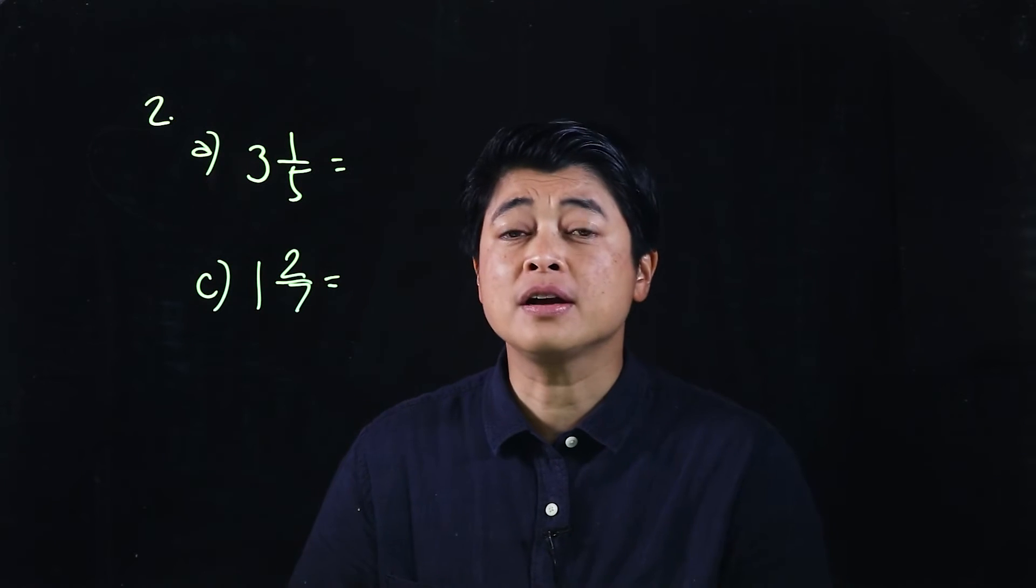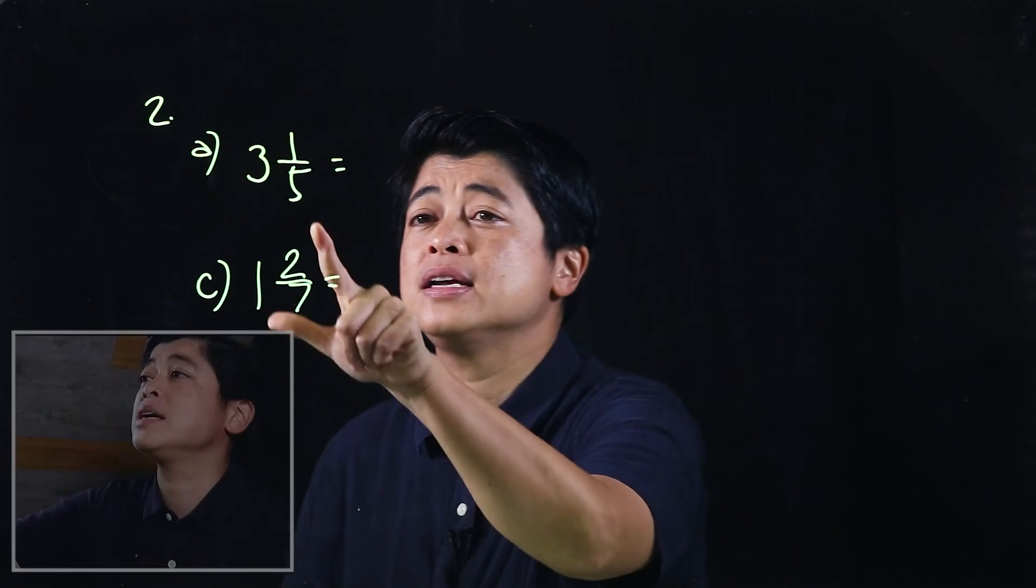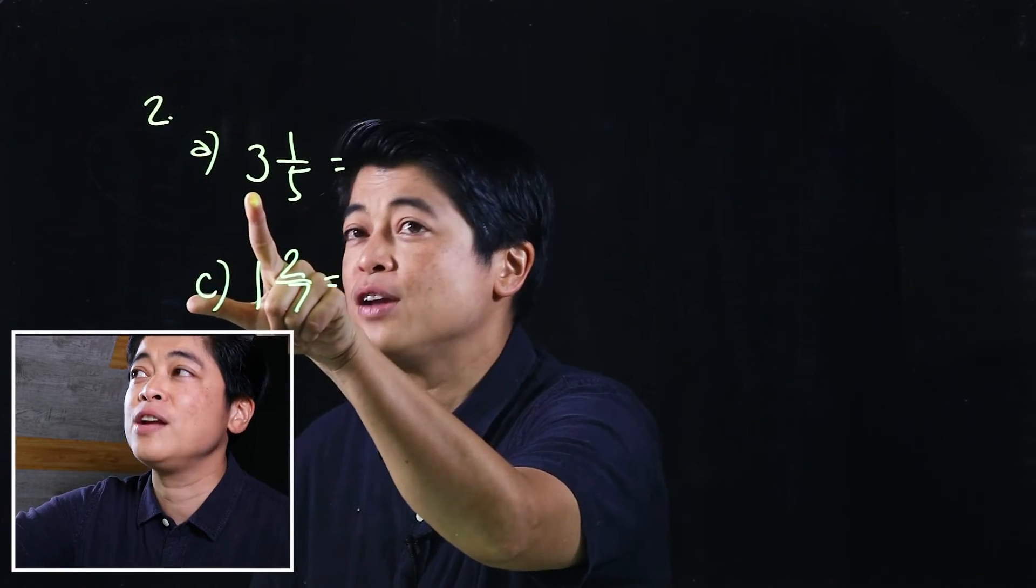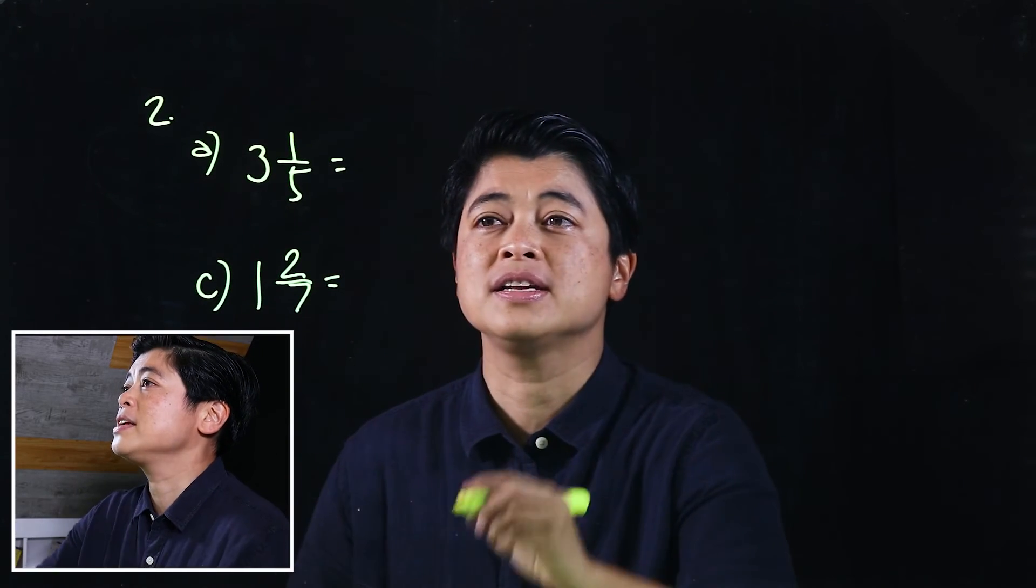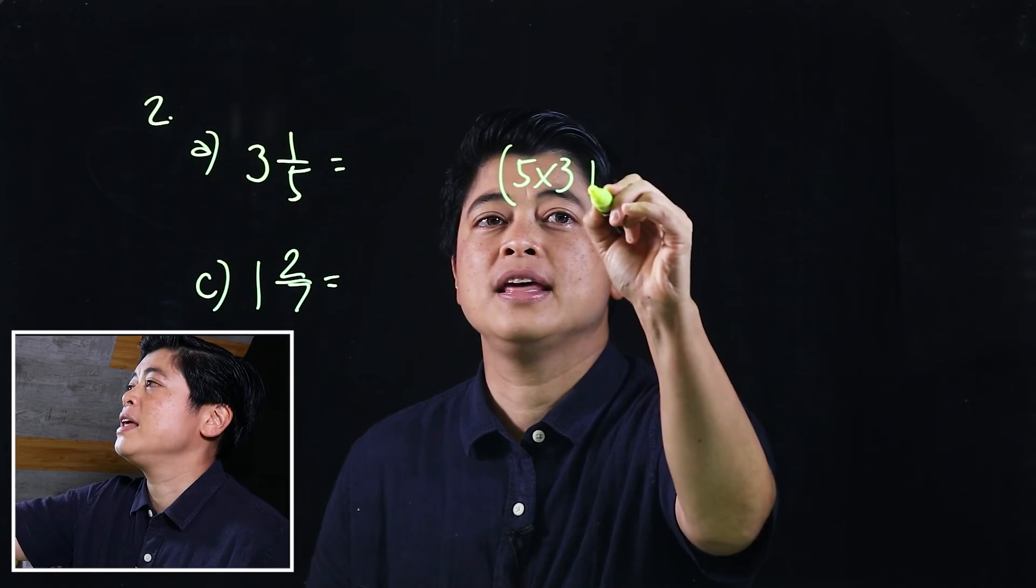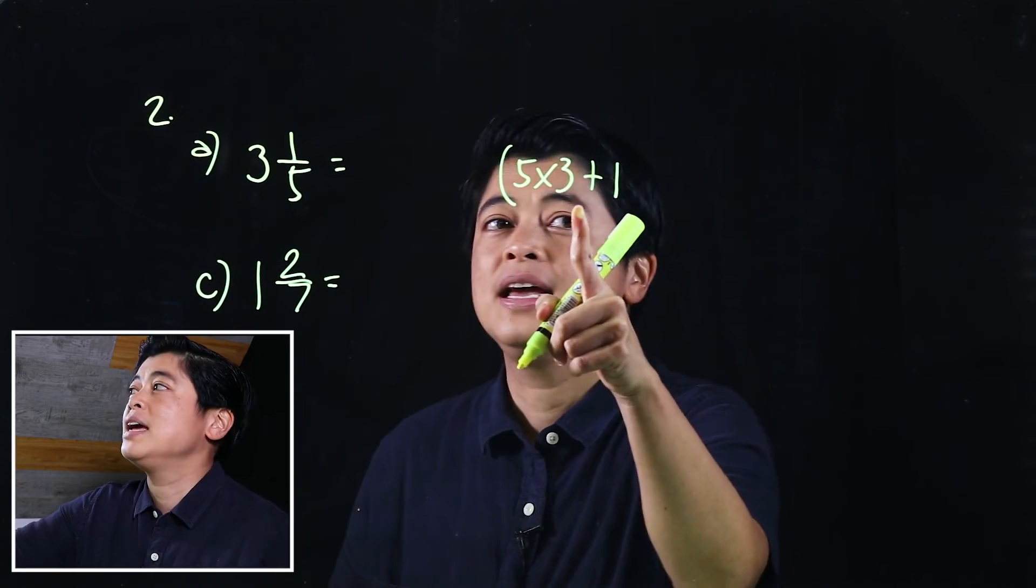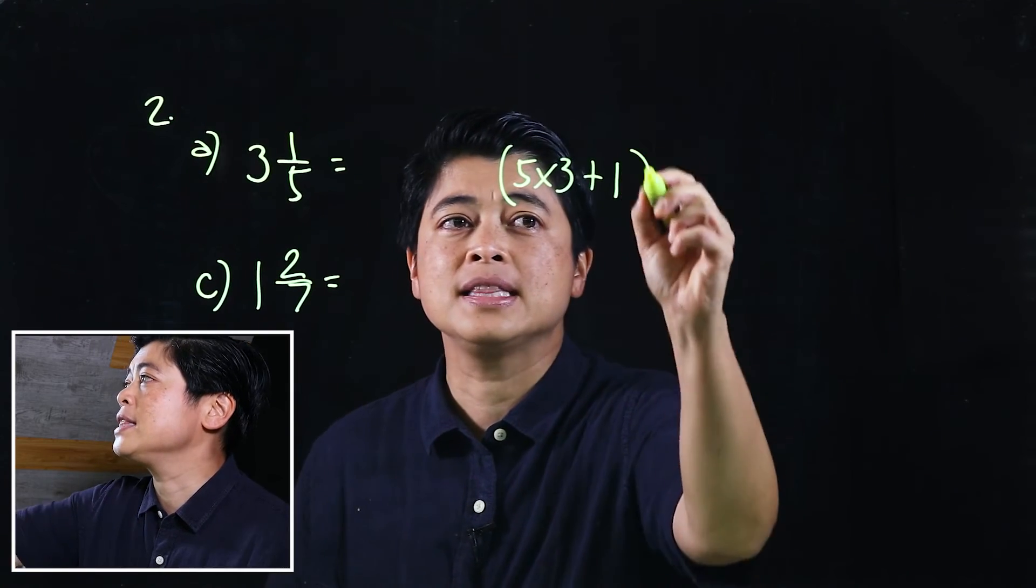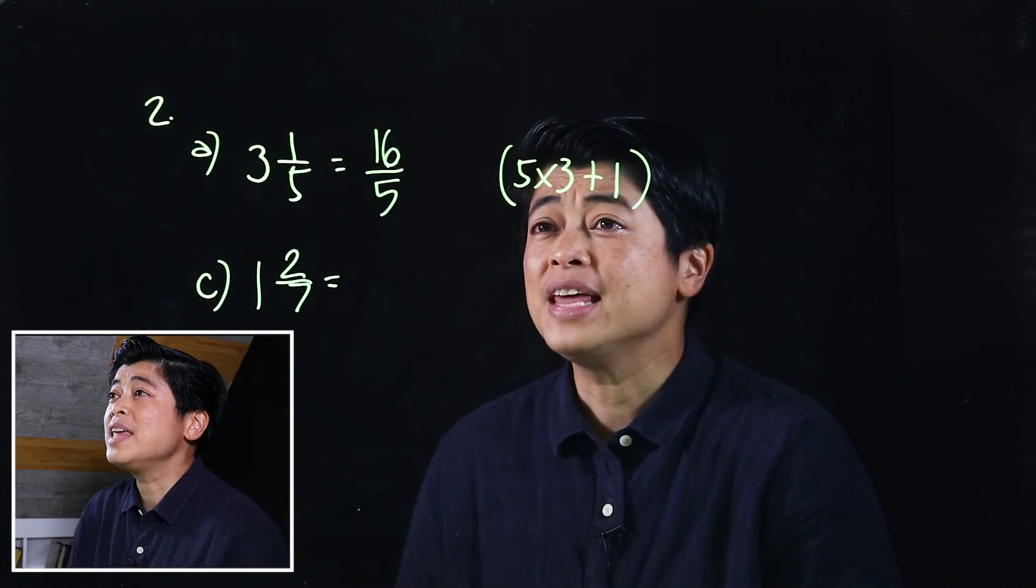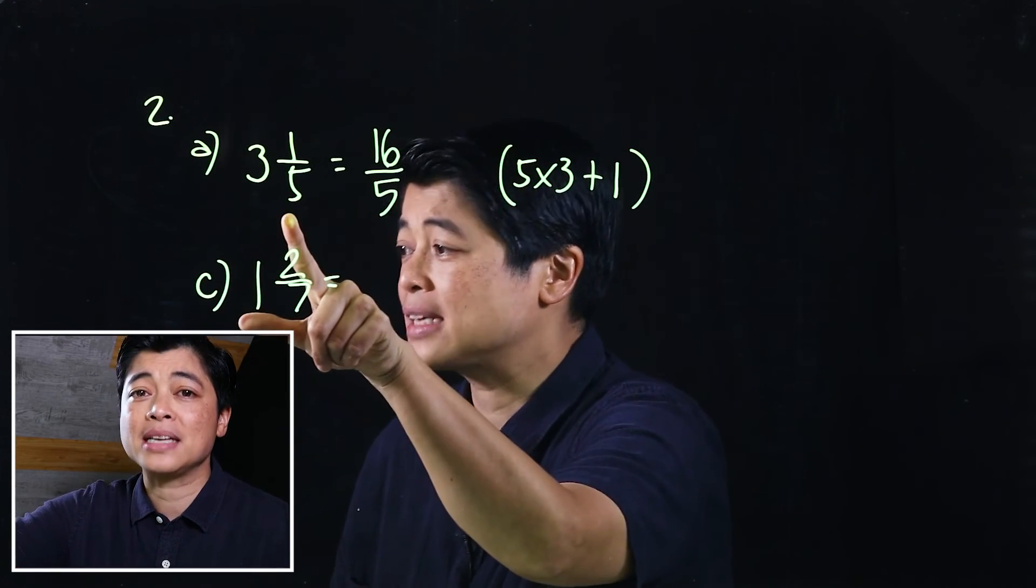It says to convert the following mixed numbers to improper fractions. When you were younger, you also learned it this way. We multiply 5 times 3 and then we add the 1. So I'm gonna put it here on the side: 5 times 3 and then we add the 1. So that means 5 times 3 is 15, and then we add the 1, which makes it 16 over 5. So this is the improper fraction for that mixed number.